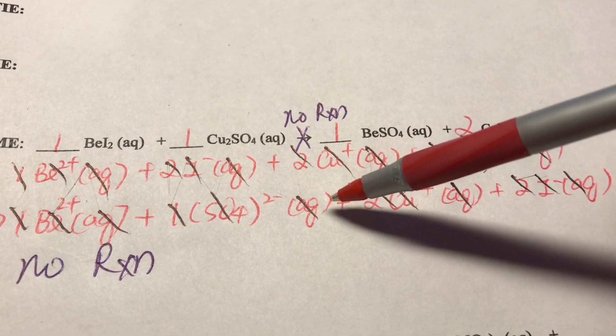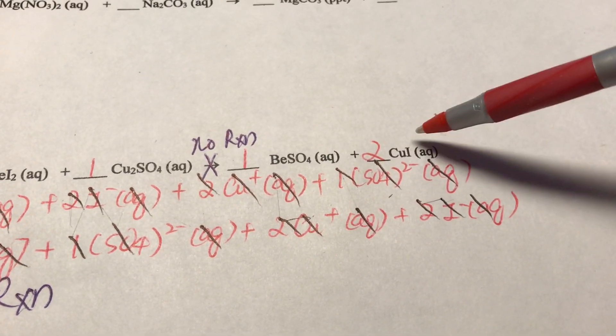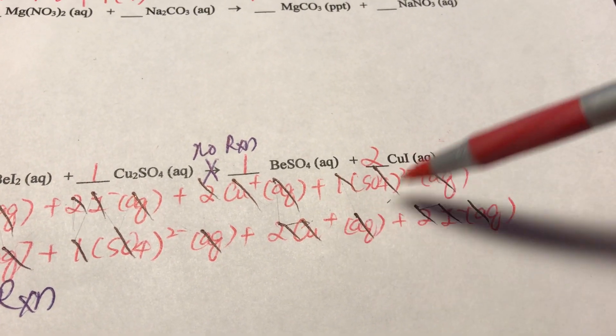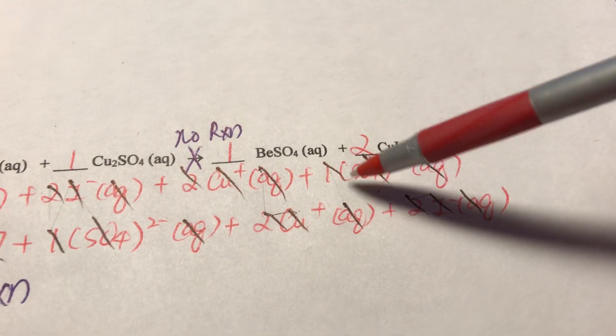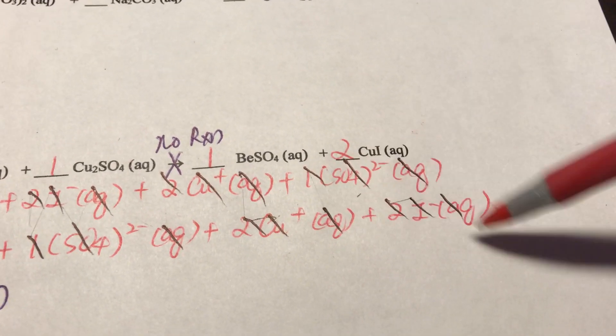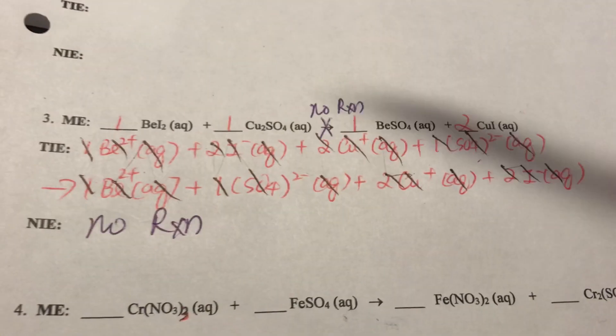And then I get 1 SO₄²⁻(aq), and then here I get 2Cu⁺(aq) because after crossover I find out Cu is a +1 charge, so 2Cu⁺(aq) and then 2I⁻(aq).